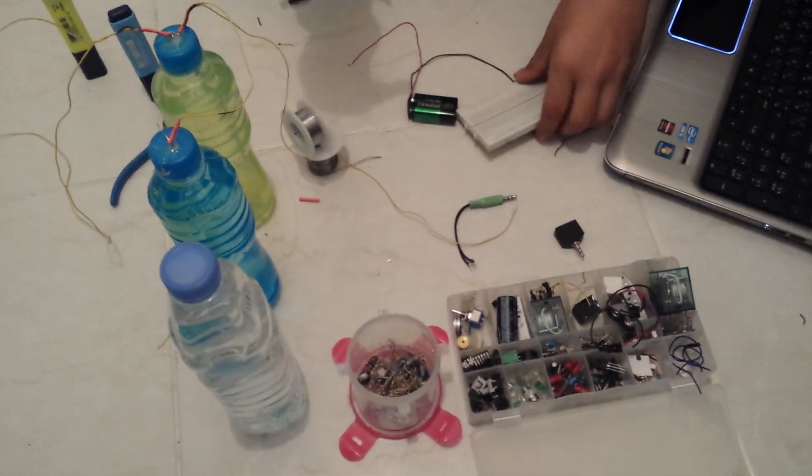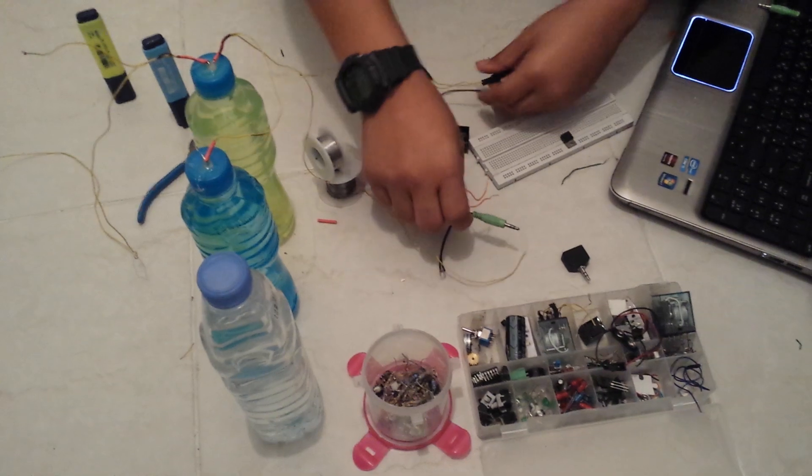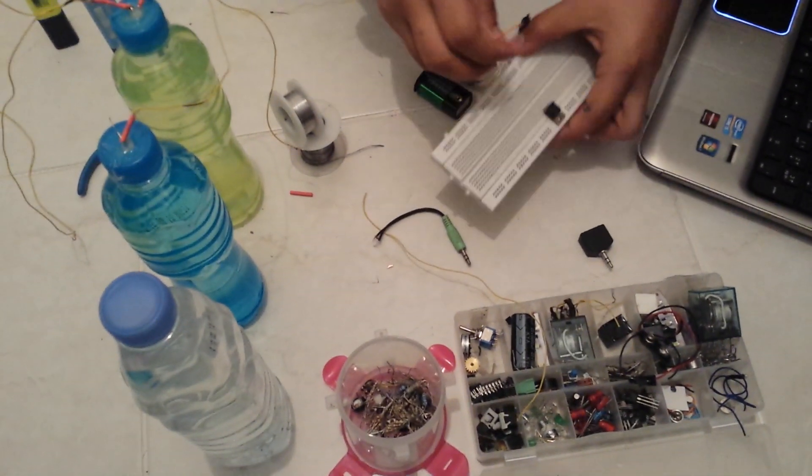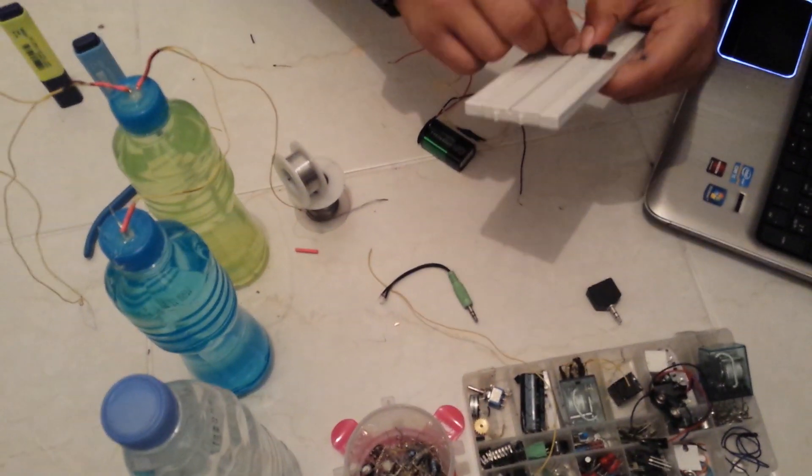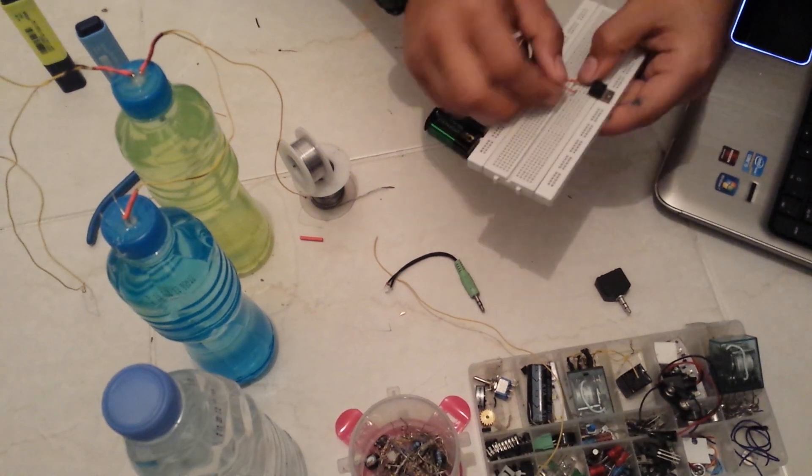We'll start by placing the 3.1mm headphone socket. You can get this off any old headphones or you can buy it from anywhere. You'll start by placing it to the right pin of the transistor and to the left pin of the transistor, like this.